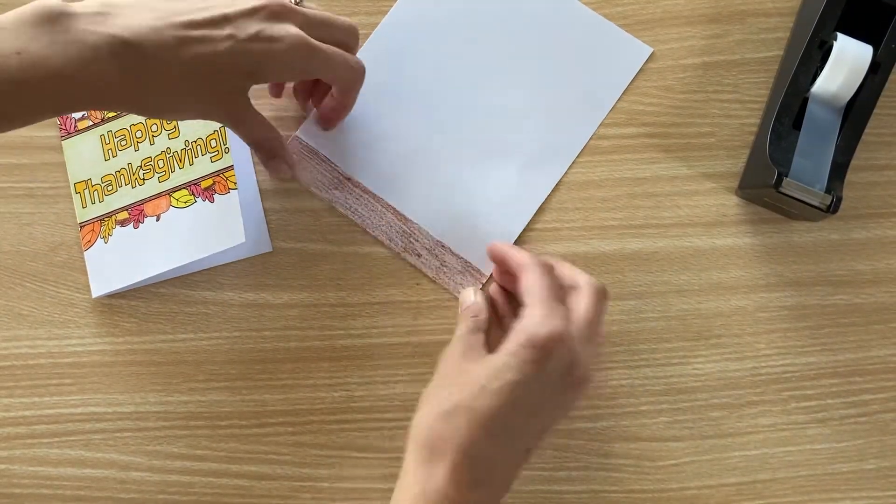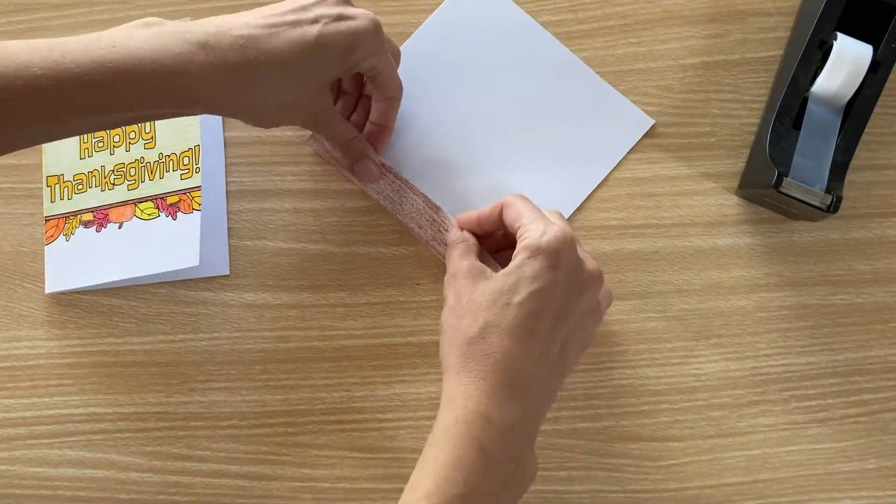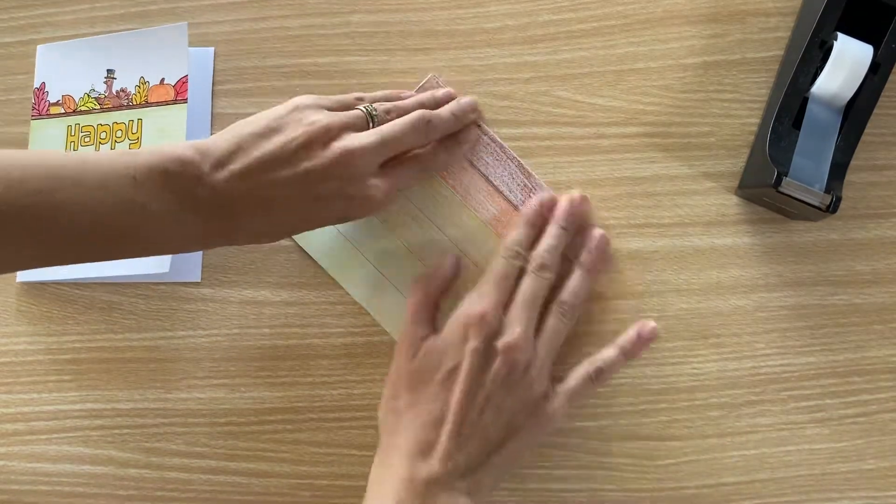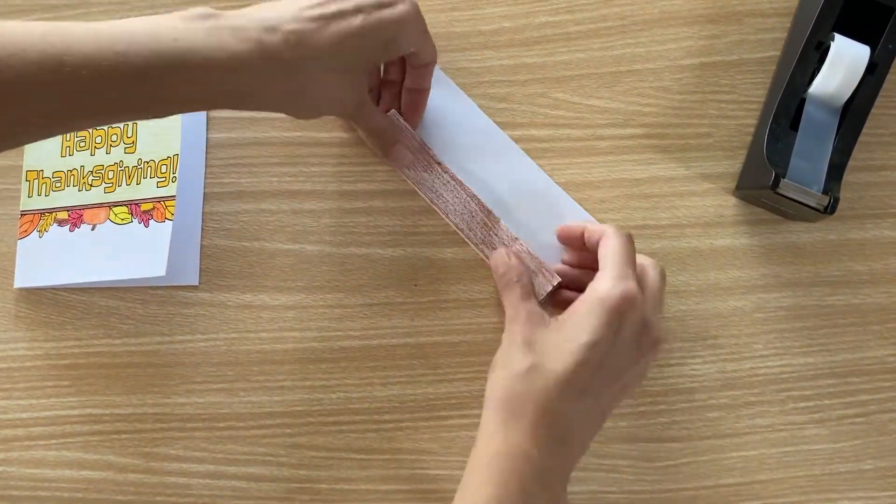After coloring, accordion fold the tail by folding the paper back and forth, back and forth, using the printed lines to guide you.